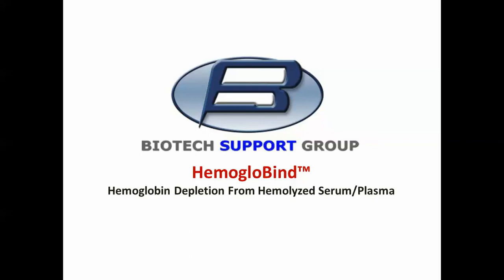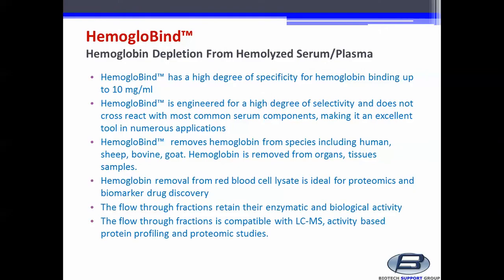Welcome to the Biotech Support Group Product Knowledge Series on Hemoglobin Depletion from Hemolyzed Serum or Plasma. Hemoglobin has a high degree of specificity for hemoglobin binding, up to 10 mg per ml. It is engineered for a high degree of selectivity and does not cross-react with most common serum components, making it an excellent tool in numerous applications.